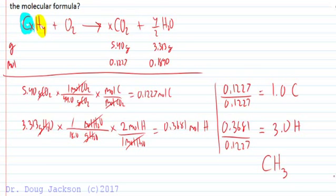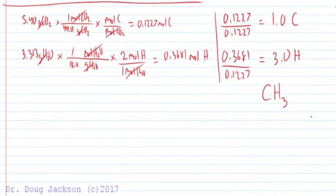That can't be a full formula as we're going to learn from Lewis structures. Carbon likes to make four bonds. But we were given another piece of data that says the molecular weight of our starting alkane is 30 grams per mole.